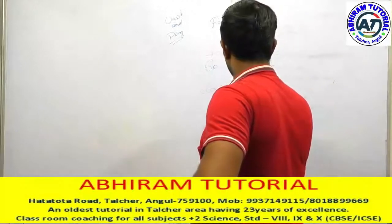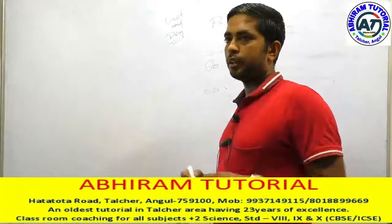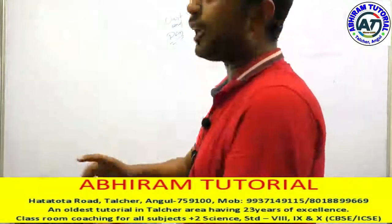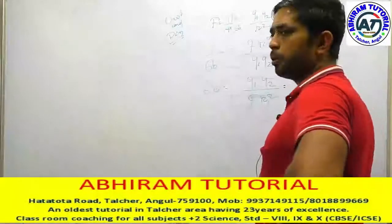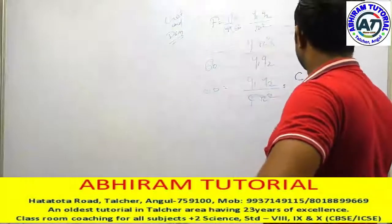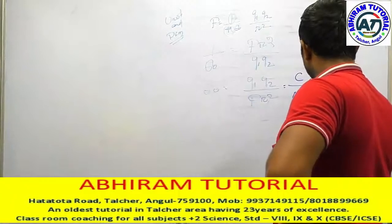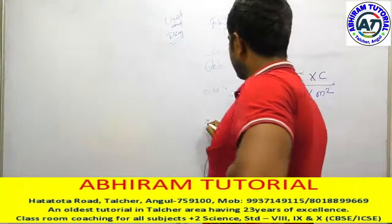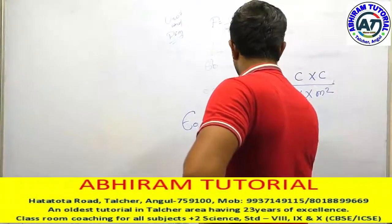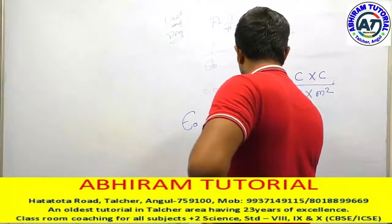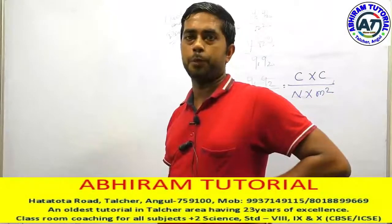So epsilon_0 equals Q1 times Q2 divided by F times r squared. The unit of Q is Coulombs, the unit of force is Newtons, and r squared gives meters squared. Therefore, the unit of epsilon_0 equals Coulombs squared divided by Newton times meter squared. This is the unit of absolute permittivity.